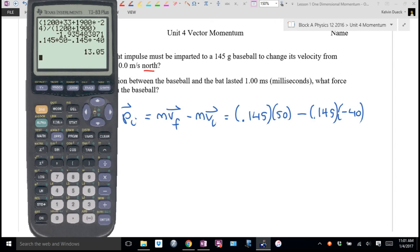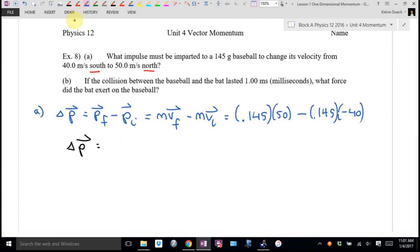What's the change in momentum, what's the impulse? By the way, I like this question. This would make a nice multiple choice question. You better believe as one of the answers I would have a positive 40 there. I'd probably make that answer A just to really annoy you. 0.145 times 50 minus 0.145 times negative 40. I get an impulse of 13.1 kilogram meters per second or newton seconds. I'd take both. Here, since I went mass times velocity to find the impulse, kilogram meters per second would be the units that I think of first.